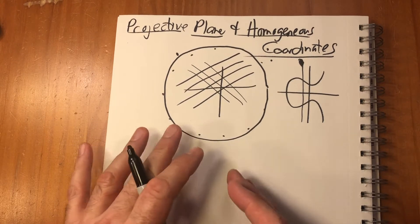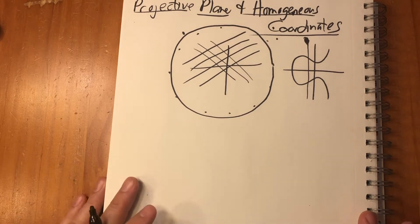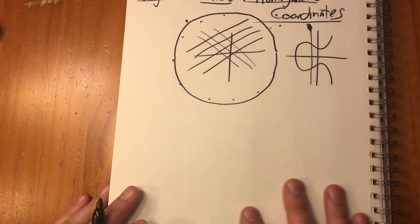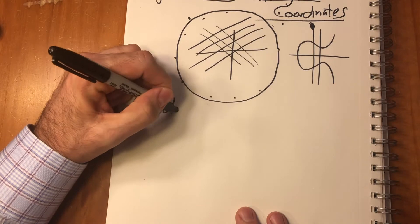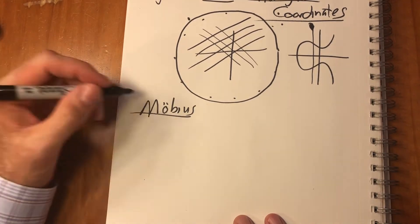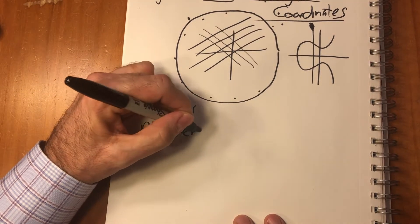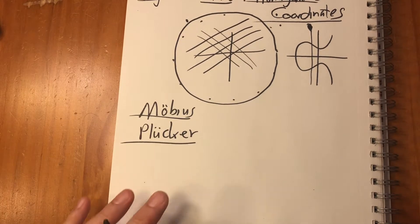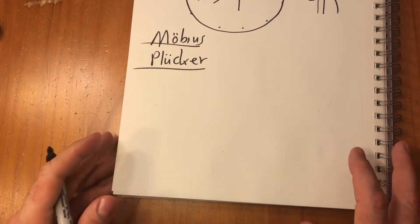That works, but it's awkward. Two mathematicians figured out a much better representation: Augustus Möbius, who we all know, and Julius Plücker, who developed a much better system for looking at the projective plane.